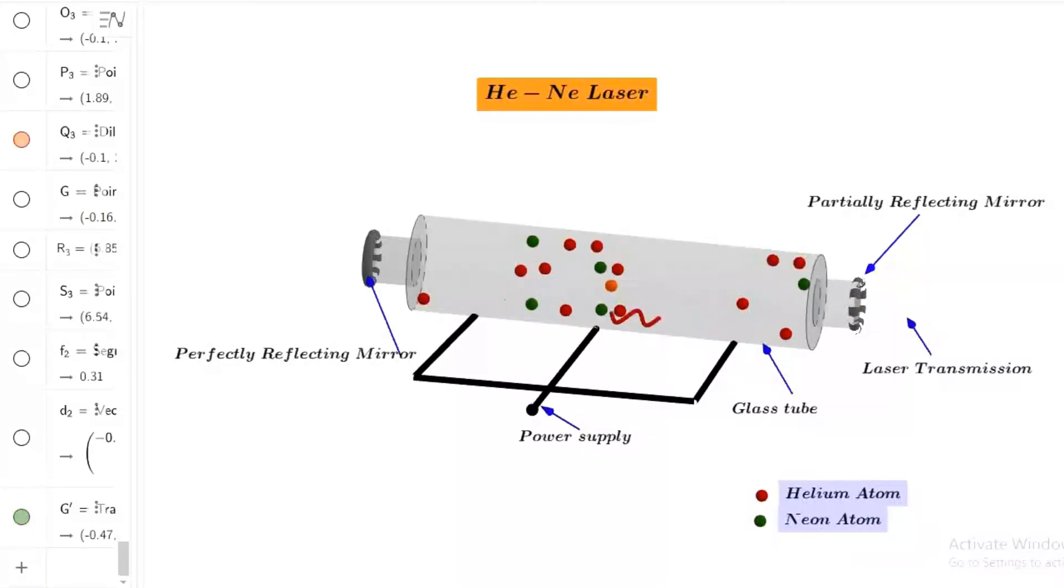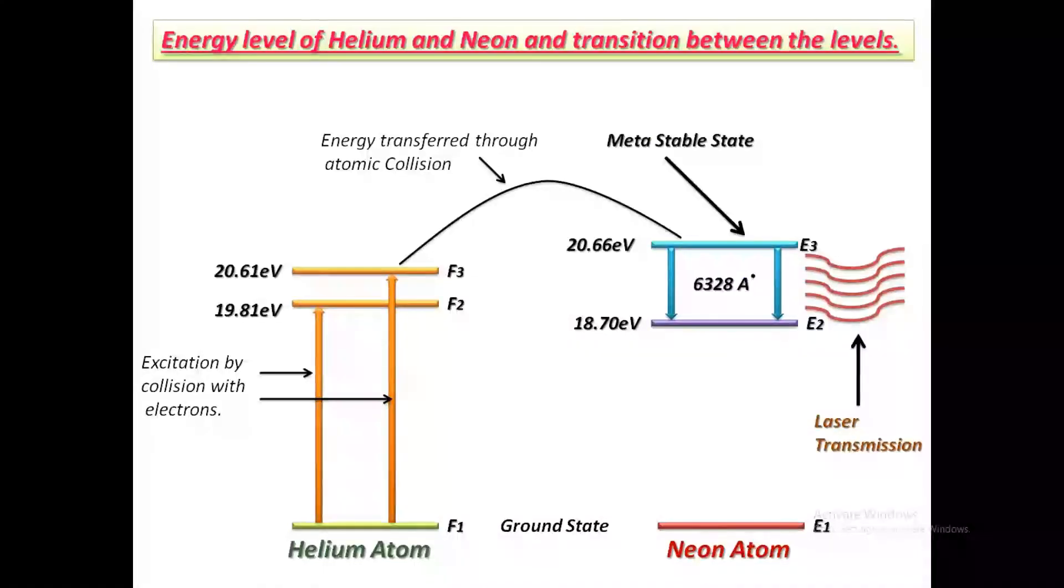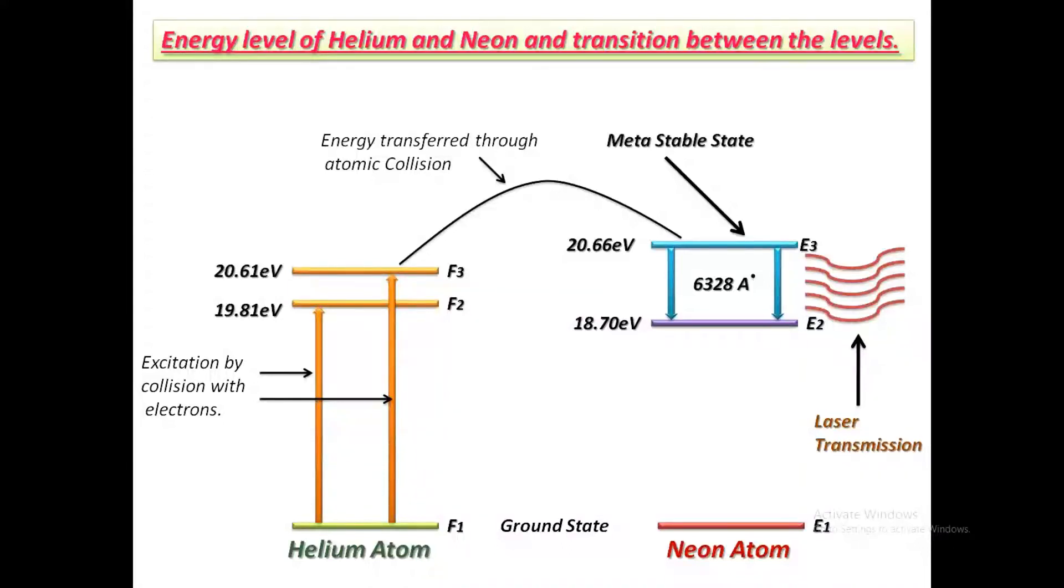Now, let's study the working of this laser. The powerful radio frequency generator is used to produce a discharge in the gas so that the Helium atoms are excited to a higher energy level. So, these are the energy level diagrams for Helium and Neon atoms. When an electric discharge passes through the gas, the electrons in the tube collide with Helium and Neon atoms and excite them to metastable state of energy 20.61 electron volt in Helium atom and 20.66 electron volt in Neon atom above the ground state. Some of the excited Helium atoms transfer their energy to unexcited Neon atoms by collision. Thus, Helium atoms help in achieving population inversion.